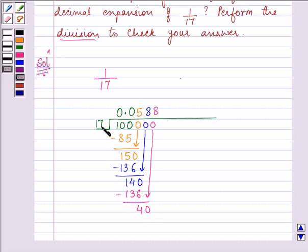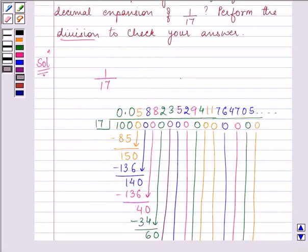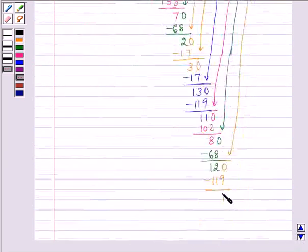17 multiplied by 2 gives us 34 and we are left with remainder 6. This procedure will go on till we reach a point where we get the remainder 1 again.